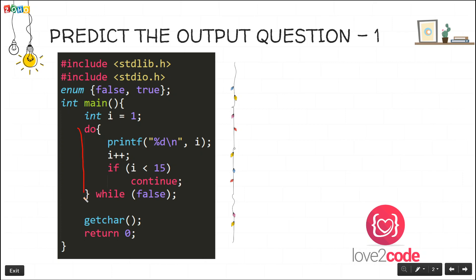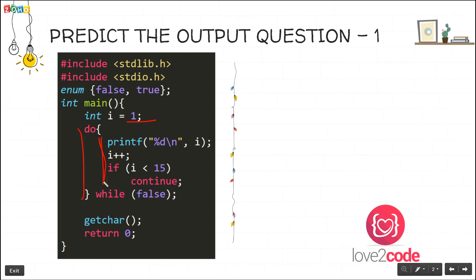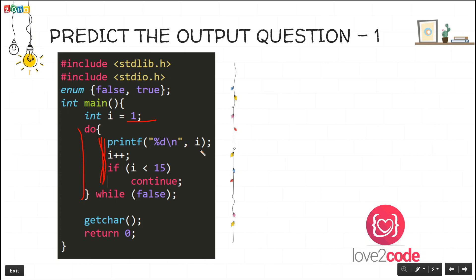We have an integer variable i initialized to 1. Since it is a do-while loop, the statements will execute at least once, then it will check the while condition. If the while condition is true, the statements will execute again unless and until the condition is false. Let's predict the output — i is initially 1, so first it will print i, then the cursor moves to the next line.